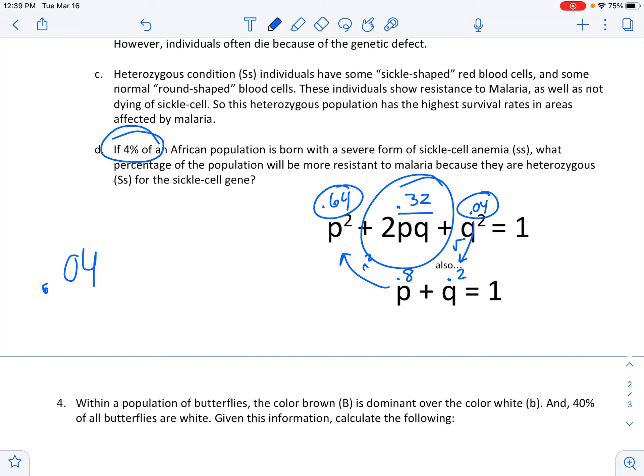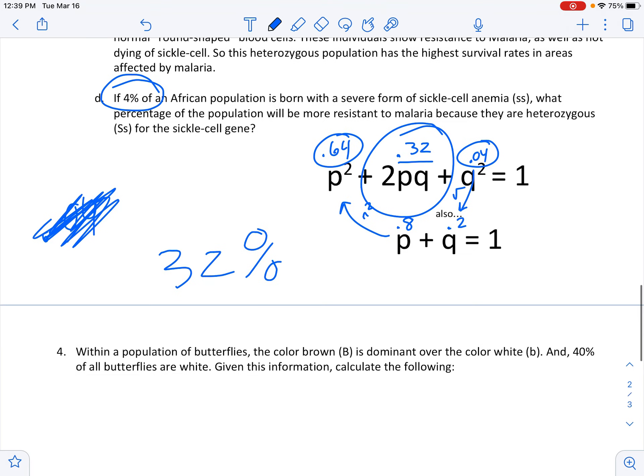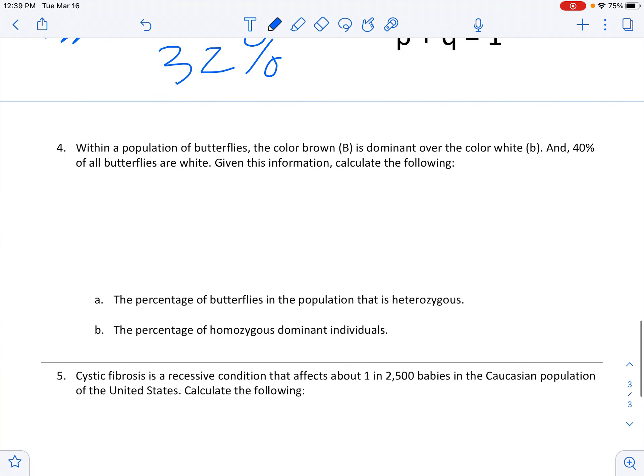Heterozygous says what percentage? So I'll write 32% of the population is heterozygous and resistant to malaria if 4% of the population is born with the severe form.